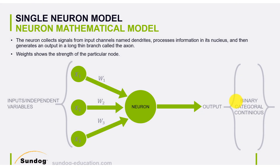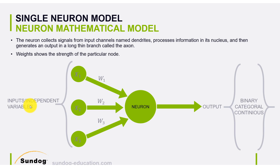Let's take a closer look at the mathematics. Here we have our neuron model with inputs x1, x2, x3 — these are called independent variables. The objective of building this neuron or artificial neural network is to take a bunch of inputs and learn the pattern to generate outputs, in a supervised fashion. The output can be binary — zero or one — which means, for example, you detect a pedestrian or not.